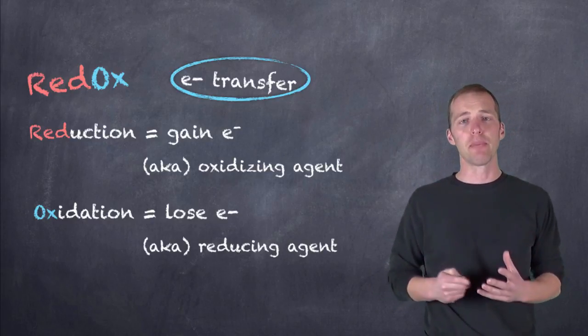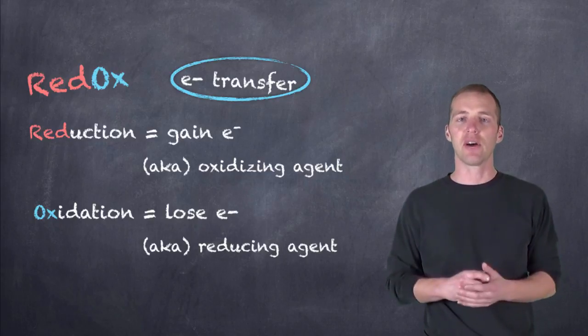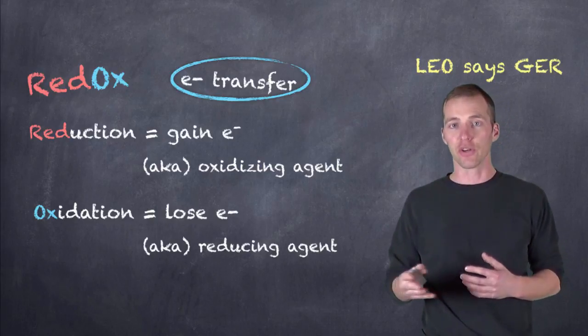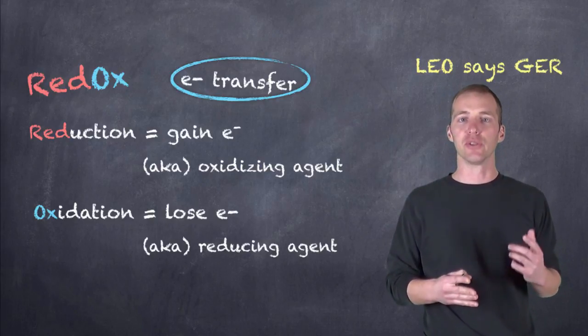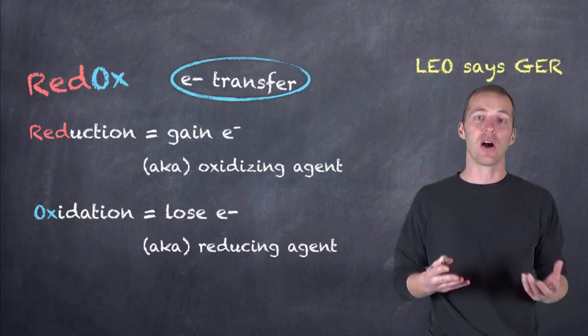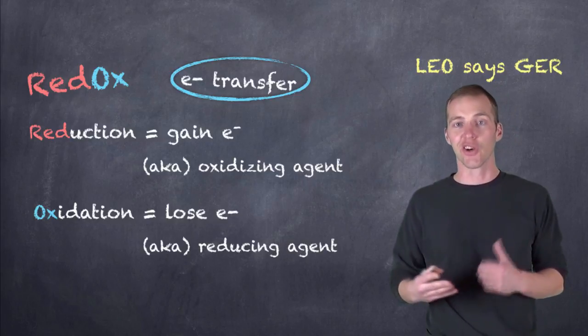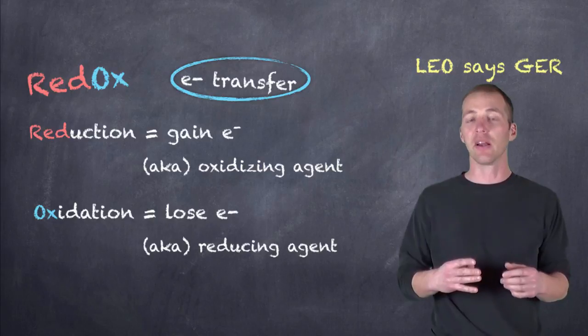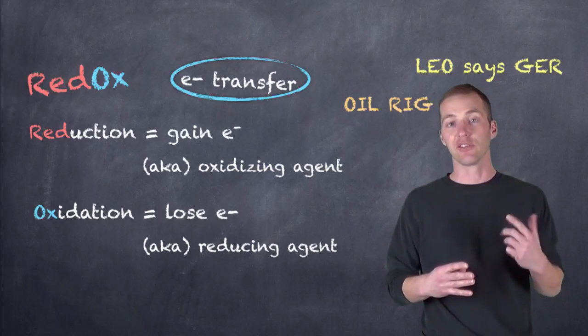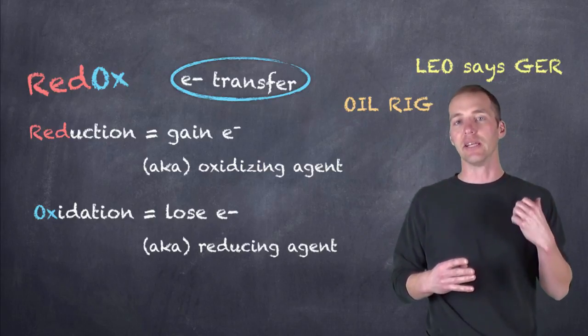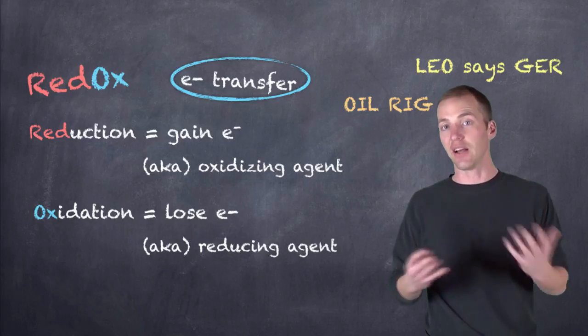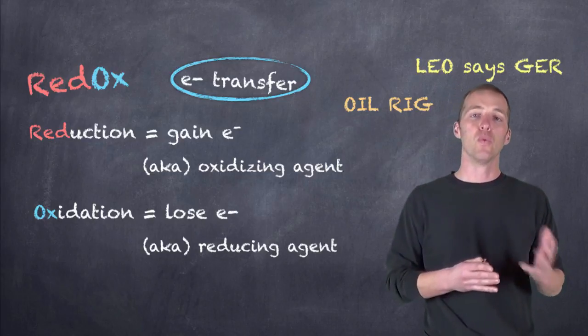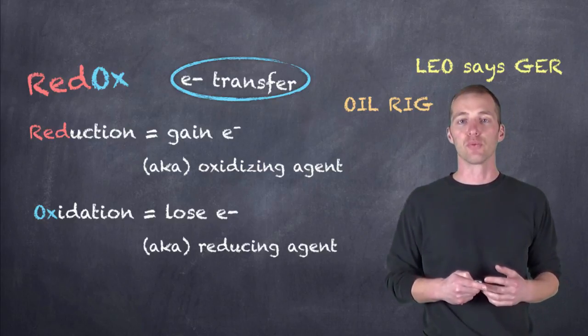So a couple of ways to remember this. There are a couple of mnemonic devices that I'm familiar with that might help you out. One of them is Leo says GER, so LEO referring to Loss of Electrons is Oxidation, says GER, Gain of Electrons is Reduction. And the other one that I've seen is also OIL RIG, which refers to Oxidation Is Loss of electrons, RIG is Reduction Is Gain of electrons. So hopefully one of those two mnemonic devices will help you remember which is oxidation and which is reduction.